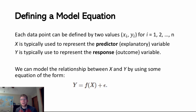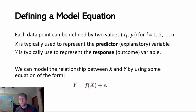We can do that by defining a model equation. Each data point can be identified by two values: the x value and the y value, where x is going to represent our predictor variable — sometimes called an explanatory variable — and y is typically going to represent our response or outcome variable.